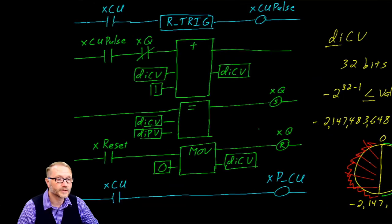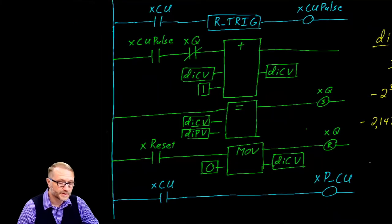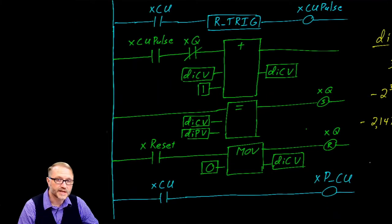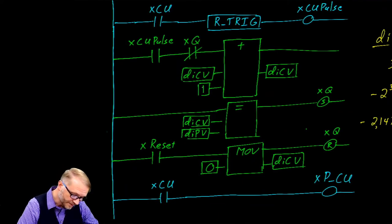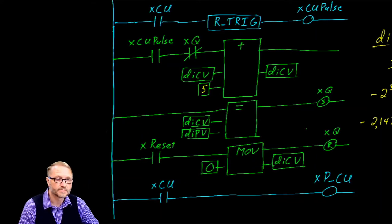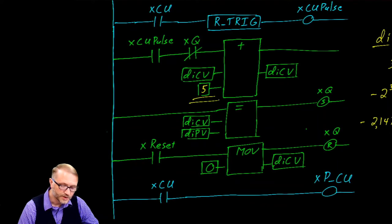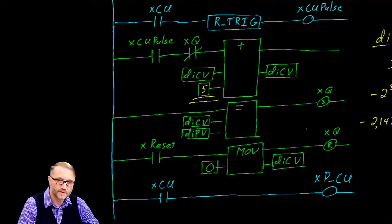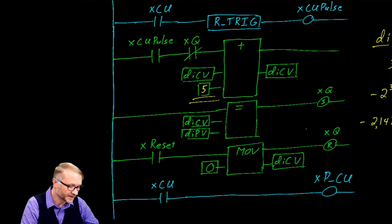Back to our code — you'll be glad to know that it's trivial to change this into a count by N counter. For example, if you wanted to count by fives, that's all you need to do. By changing that value right there, you can make this go from 0, 5, 10, 15, 20.